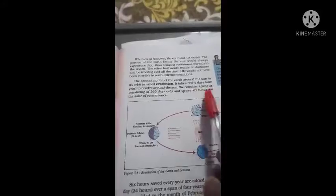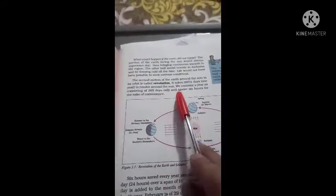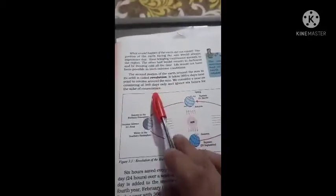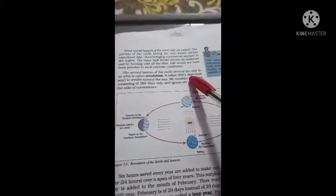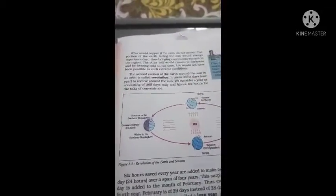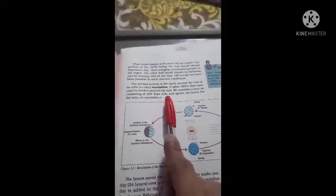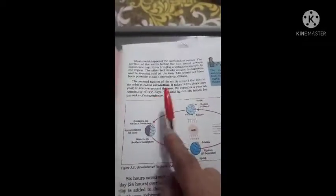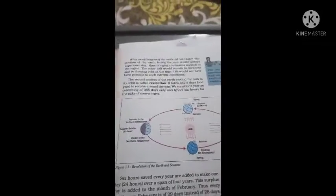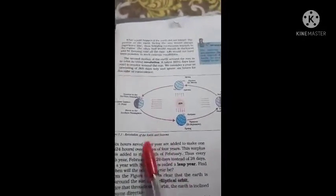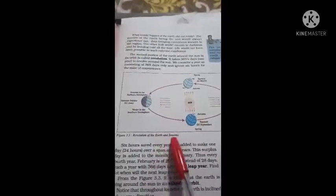We consider a year as consisting of 365 days and ignore the six hours for the sake of convenience. हम जो one-fourth, one-fourth, one-fourth करके जोड़ते हैं तो एक दिन बन जाता है — 365 days में जुड़ने पर 366 days बन जाते हैं। Revolution of the Earth causes seasons — revolution के कारण seasons change होते हैं।